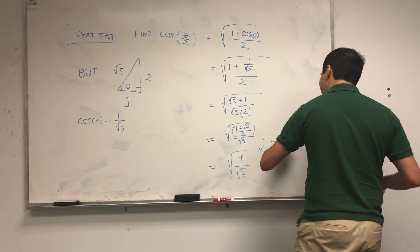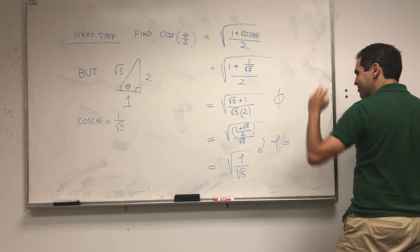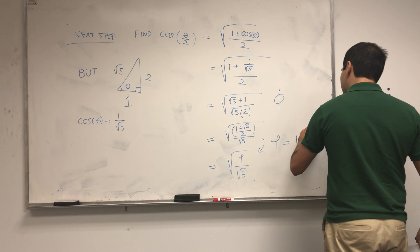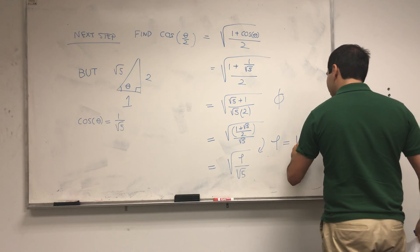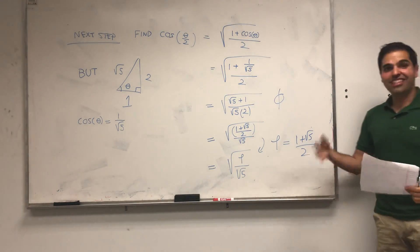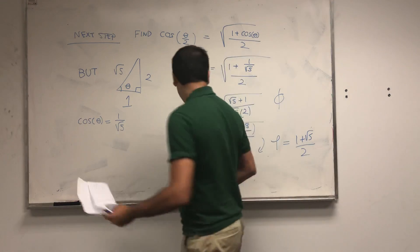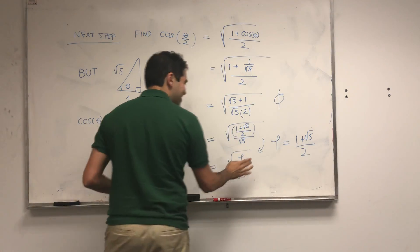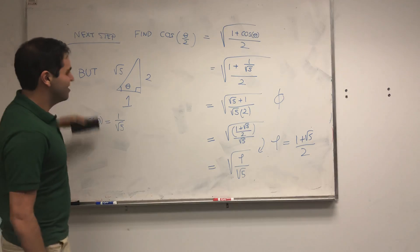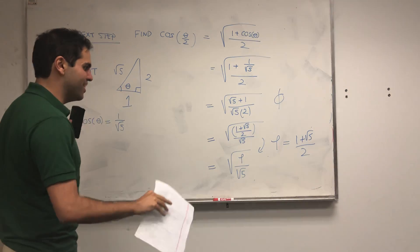You can write this as square root of (1 plus square root of 5) over 2, divided by square root of 5. Some people recognize that as the golden ratio! So this really becomes square root of φ over square root of 5, where φ is the golden ratio: (1 plus square root of 5) over 2. That's what I meant by the golden rule — our golden ratio appears here, which I think also explains the title of this video.